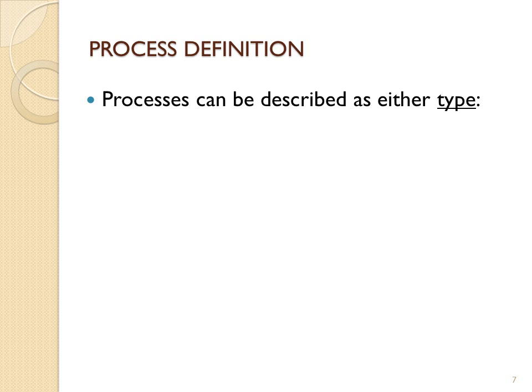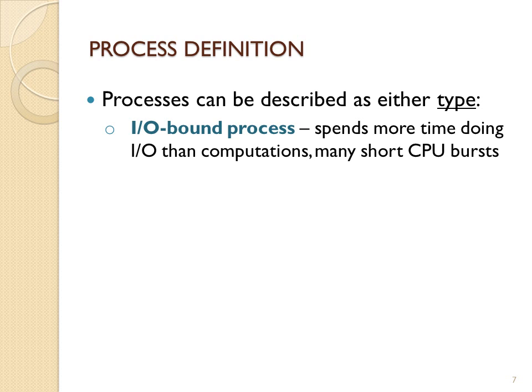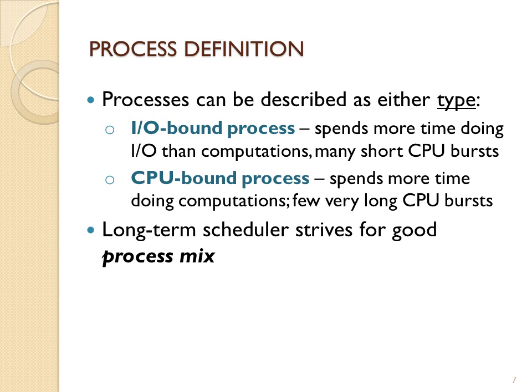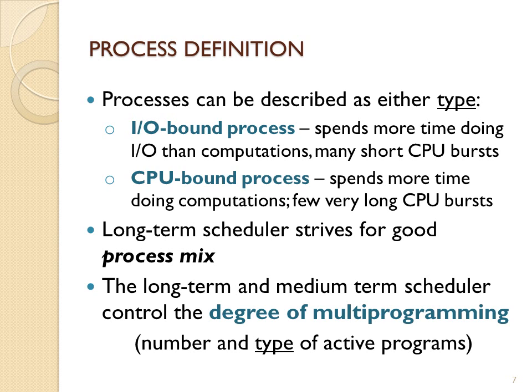There are two different ways to define a process. You can define it as an I/O-bound process — one that spends more time blocked in device queues in I/O, not on the CPU, so it has shorter CPU bursts and longer I/O times. Or you can have a CPU-bound process, which has longer CPU bursts and less I/O time. The goal for good multiprogramming is to have a good mix of CPU-bound and I/O-bound processes so that throughput is maximized and the system can get a lot of work done.